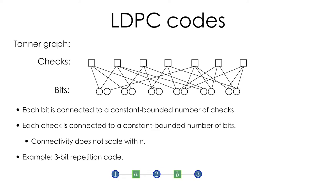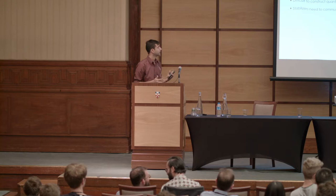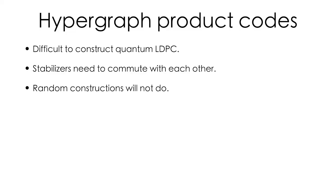Here's an example — a three-bit repetition code with a fairly simple factor graph: just a line. I've chosen to index my variable nodes by numbers and my checks by small Latin letters. Hypergraph product codes are interesting because in general it's difficult to construct quantum LDPC codes where we'd like to maintain the low degree of both qubits and checks while at the same time enforcing the commutation relations between the stabilizers. Unlike the classical case, random constructions don't suffice, so we need alternative ways to construct quantum LDPC codes.